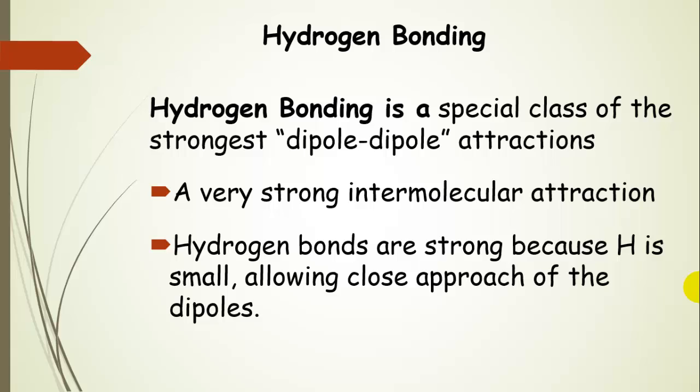Our last intermolecular force is hydrogen bonding. This is a special class of the strongest dipole-dipole attractions and is a very strong intermolecular attraction, though not as strong as a covalent bond. Hydrogen bonds are very strong because hydrogen is small, allowing really close approach of the dipoles. The electrostatic attraction depends on distance, falling off quickly at larger distances — so the closer they are, the stronger the interaction.